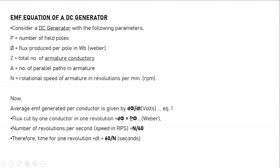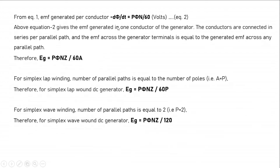So dφ is equal to P × φ. The number of revolutions per second is N/60 (converting RPM to RPS). Therefore, the time for one revolution dt = 60/N seconds. Now with dφ and dt known, we calculate dφ/dt. When you do dφ/dt you get Pφn/60 volts.